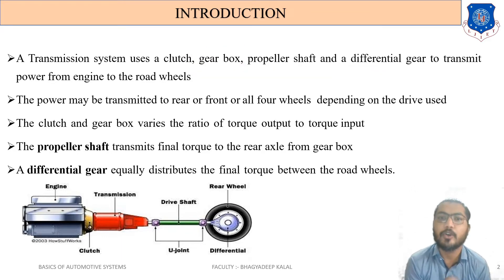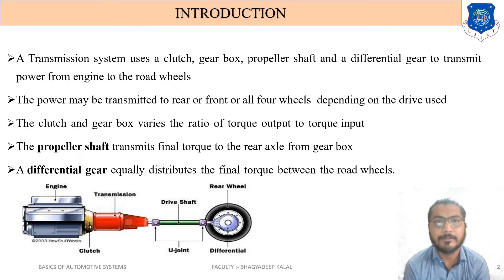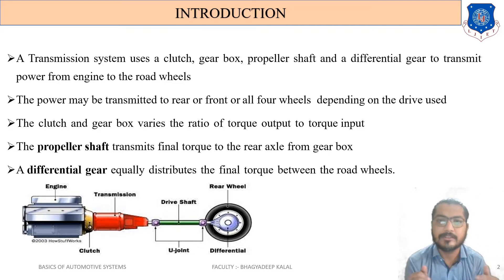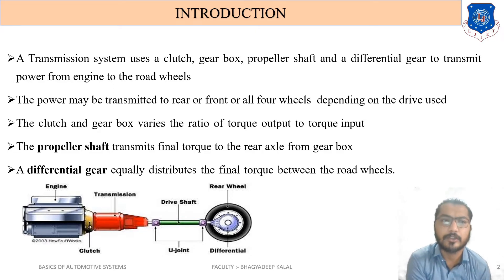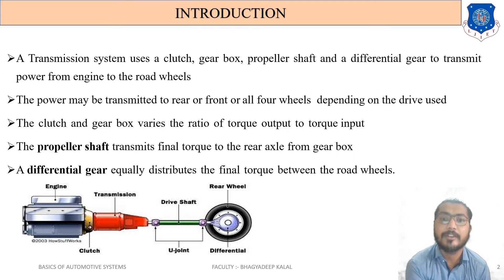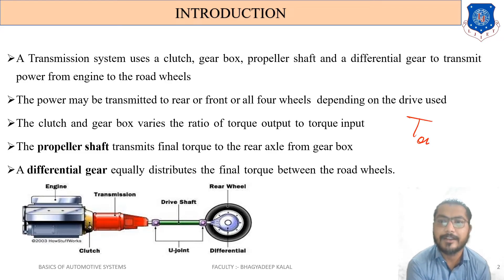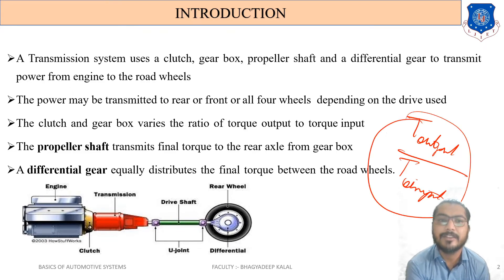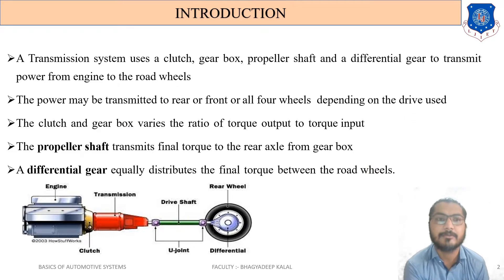Power may be transmitted to the rear, front, or all four wheels depending on the drive used. The clutch and gearbox vary the ratio of torque output to torque input — meaning they multiply or vary the torque as required. This ratio is torque output divided by torque input, and it can be varied using the gearbox and clutches.